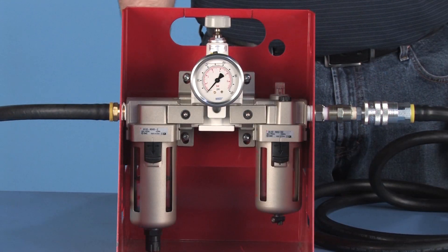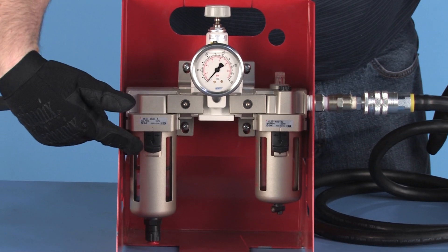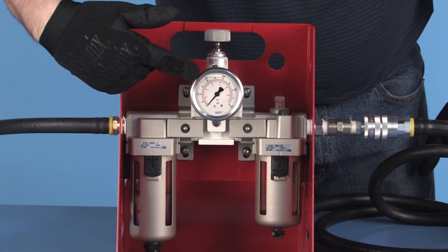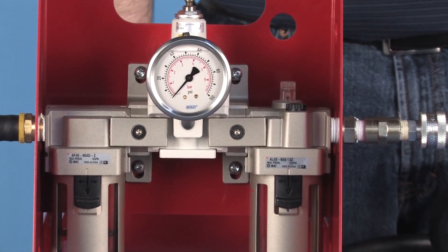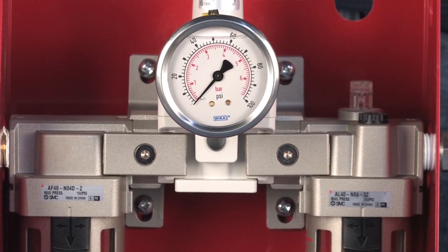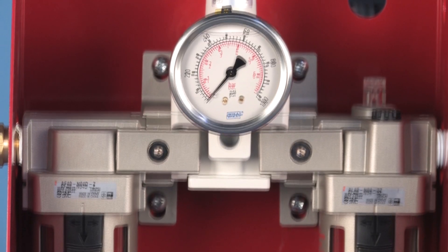The air control assembly, or FRL, consists of a filter, a pressure regulator, and a lubricator. Do not operate the J-GUN without this FRL unit in the airline, as serious damage to the tool can result.